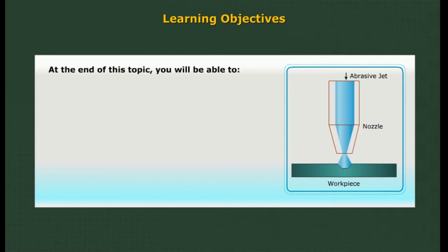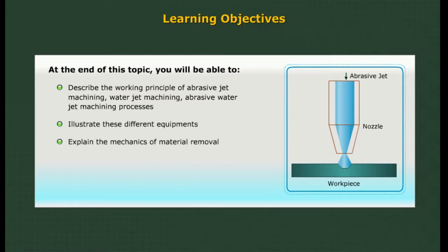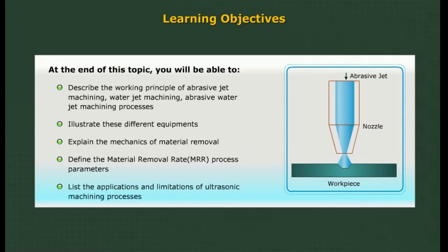Abrasive water jet machining. Learning objectives: at the end of this topic you will be able to describe the working principle of abrasive jet machining, water jet machining, and abrasive water jet machining processes; illustrate the different equipment; explain the mechanics of material removal; define the material removal rate (MRR); list the process parameters; and list the applications and limitations of ultrasonic machining processes.